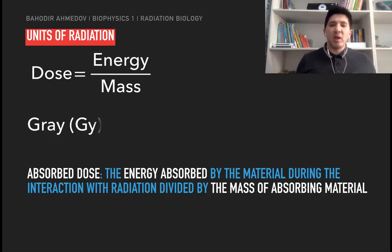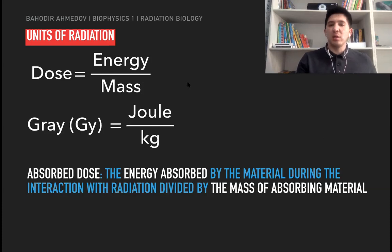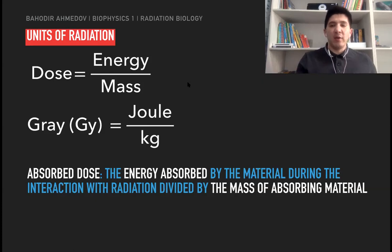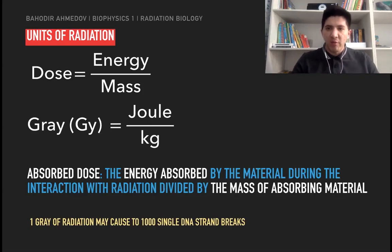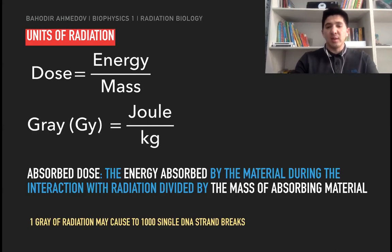The unit of radiation is called the gray, which is equal to the energy in joules divided by the units of mass, kilograms. One gray of dose is really big — for example, just for comparison, one gray of radiation may cause 1,000 single DNA strand breaks.